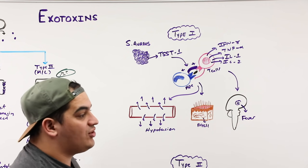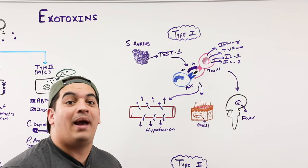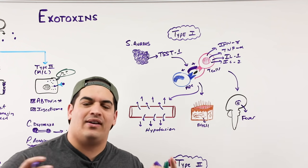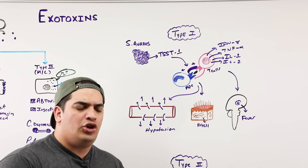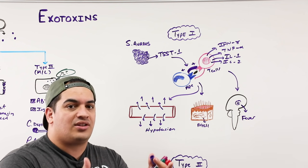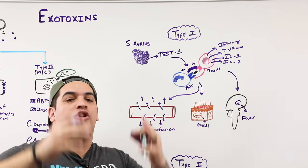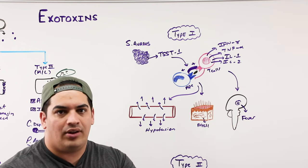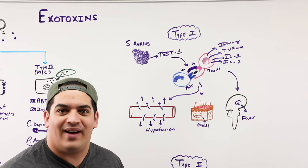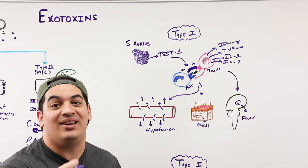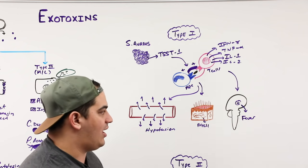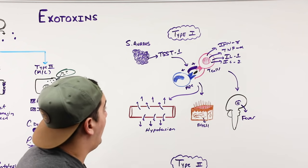Exotoxins are relatively more fatal compared to endotoxins — you only need a lower concentration of exotoxins to be fatal, whereas with endotoxins fatality increases as concentration increases. This is another key difference between endotoxins and exotoxins.